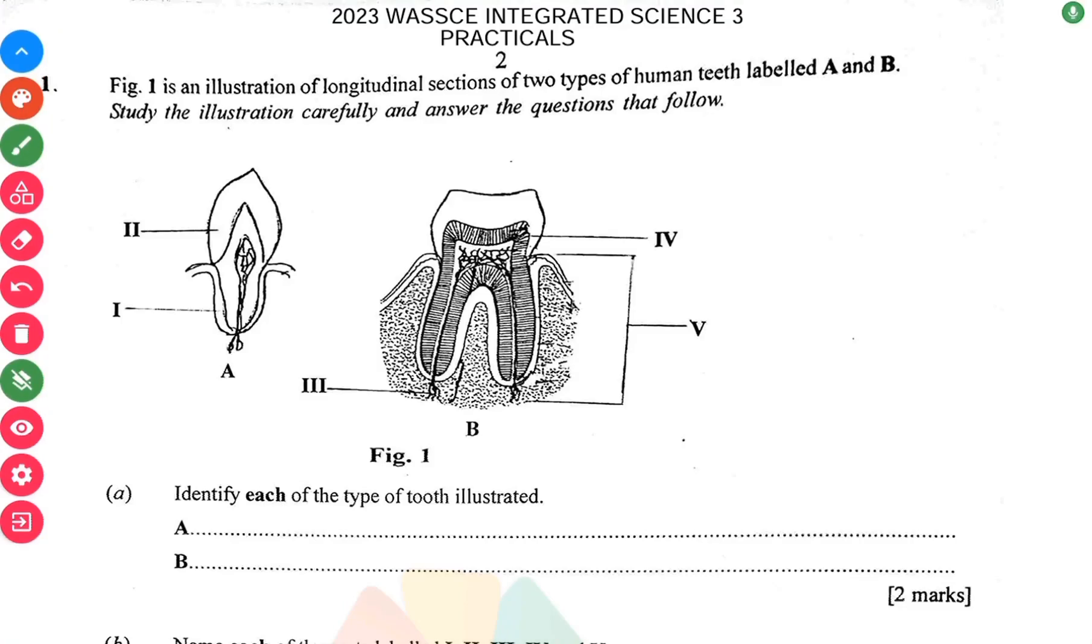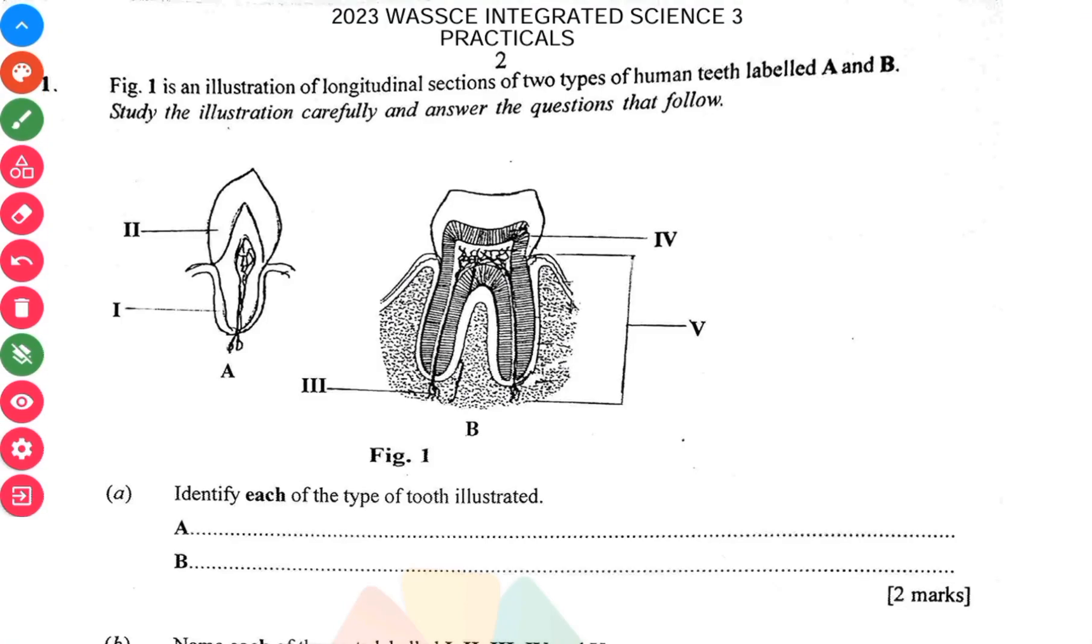Welcome to this video. We're going to solve the Greater Science Practicals for the WASSCE 2023, so we start immediately. Identifying the type of tooth, A here is a canine, which has a pointed enamel. Then B here is the molar, which has a wide enamel as well.